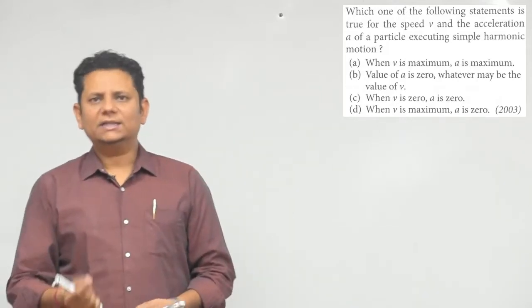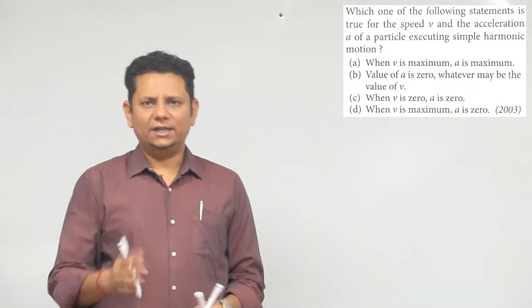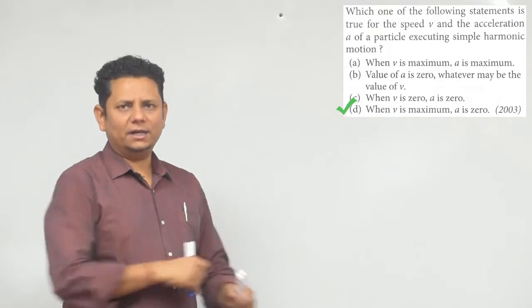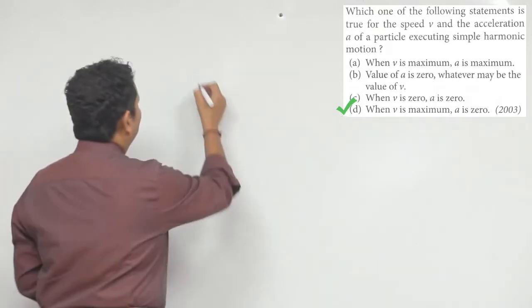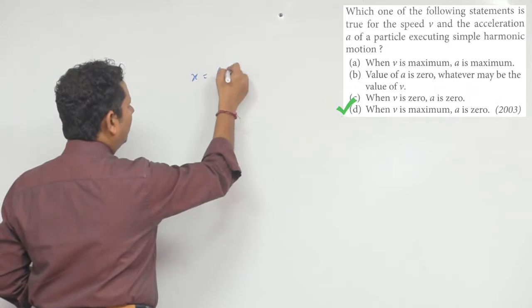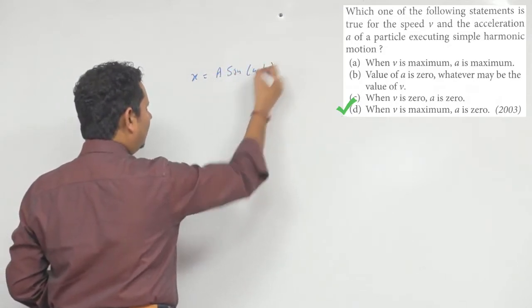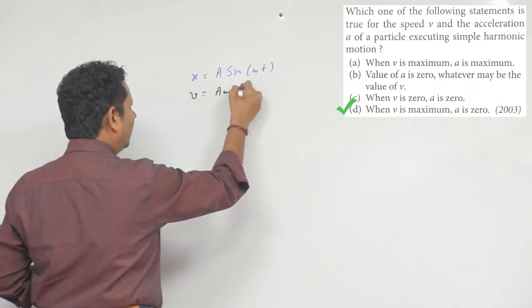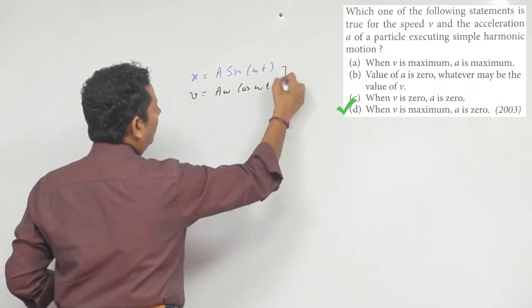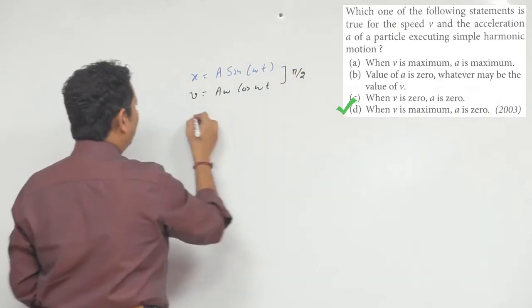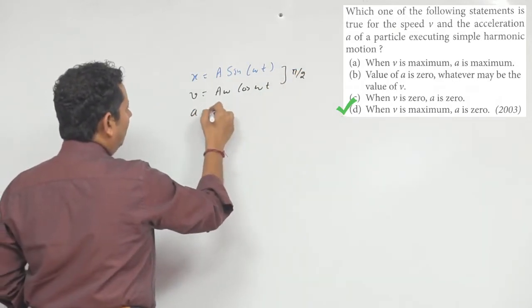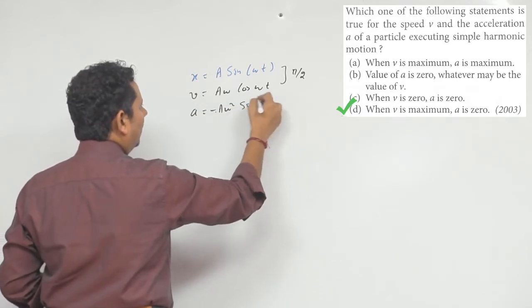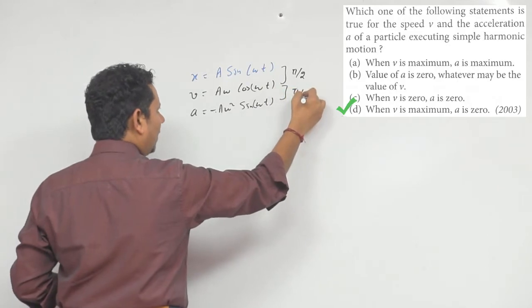अगर आपको थोड़ा सा भी experience है SHM का, इसका right answer होना चाहिए D. एक बार check कर लेते हैं. V और A की equation लिखें तो: displacement X is equal to A sin of omega T. Velocity V is equal to A omega cos of omega T. और इन दोनों के बीच में phase difference हो गया pi by 2. Acceleration A is equal to minus A omega square sin of omega T. और इन दोनों के बीच में भी pi by 2 का difference है.